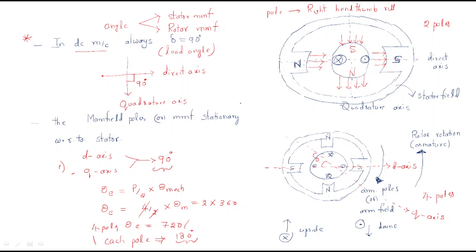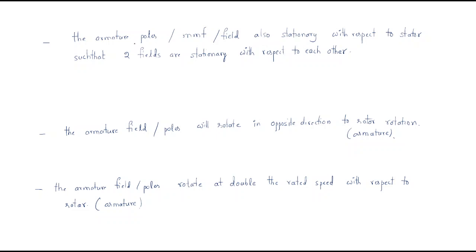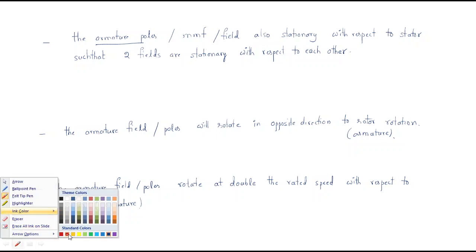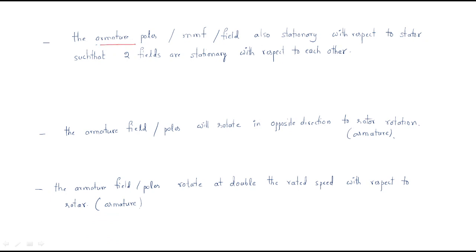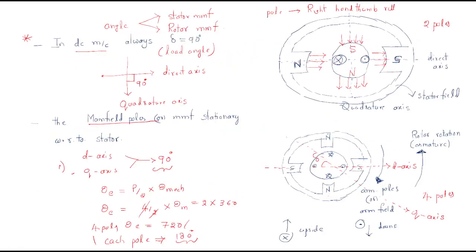Hello everyone. Last session we discussed about load angles, direct axis and quadrature axis. Now we should discuss in more depth about the MMFs. The armature poles, armature MMF, and armature field are all stationary with respect to the stator, such that the two fields are stationary with respect to each other. Before discussing this, just look here — the main field poles and MMF are stationary with respect to the stator.